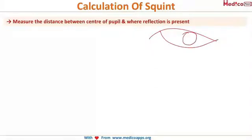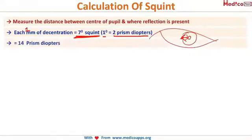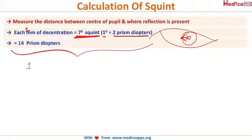Assuming the center of the pupil is here, the light will fall somewhere displaced because the eye is deviated. The distance between the center of the pupil and the deviated light reflection gives the magnitude of squint. Each 1 mm of decentration equals 7 degrees of squint. Also, 1 degree of squint equals 2 prism diopters. So if a patient has 7 degrees of squint, they have 14 prism diopters. Memorize: 1 mm decentration = 7 degrees = 14 prism diopters.